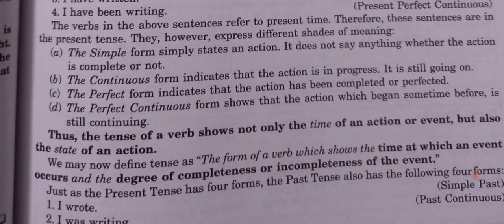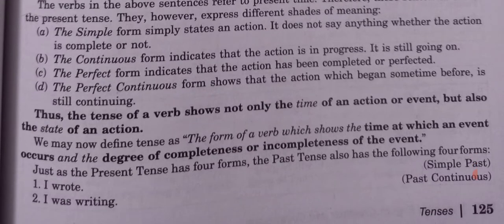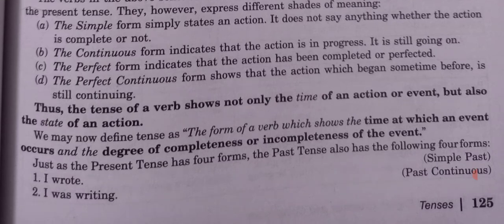The simple form simply states an action — it doesn't say whether the action is completed or not. The continuous form indicates that the action is in progress, still going on. The perfect form indicates that the action has been completed or perfected. The perfect continuous form shows that the action which began sometime before is still continuing.